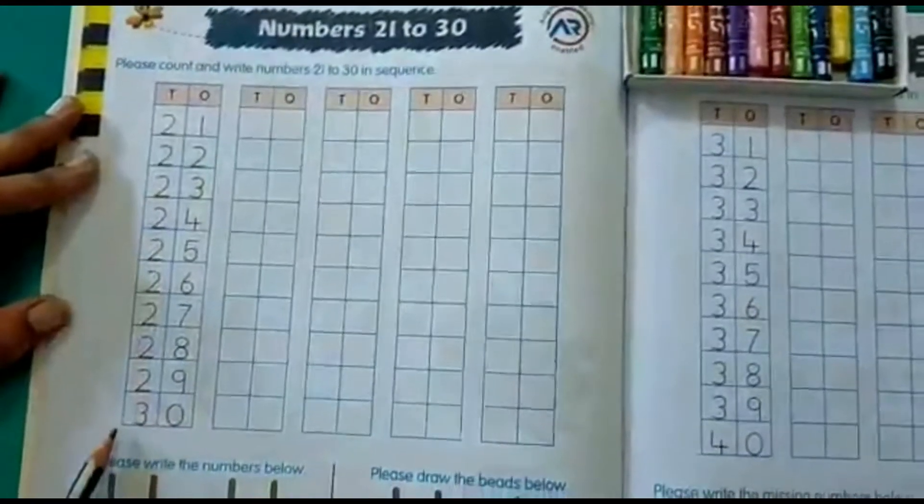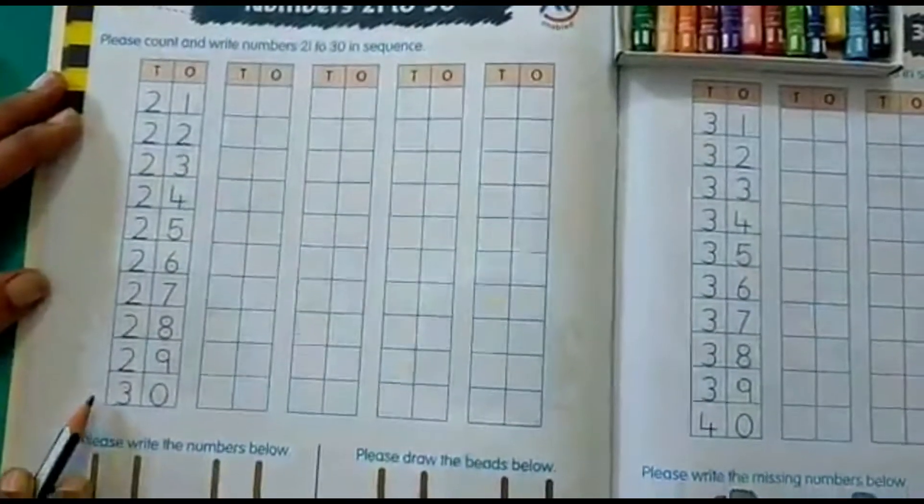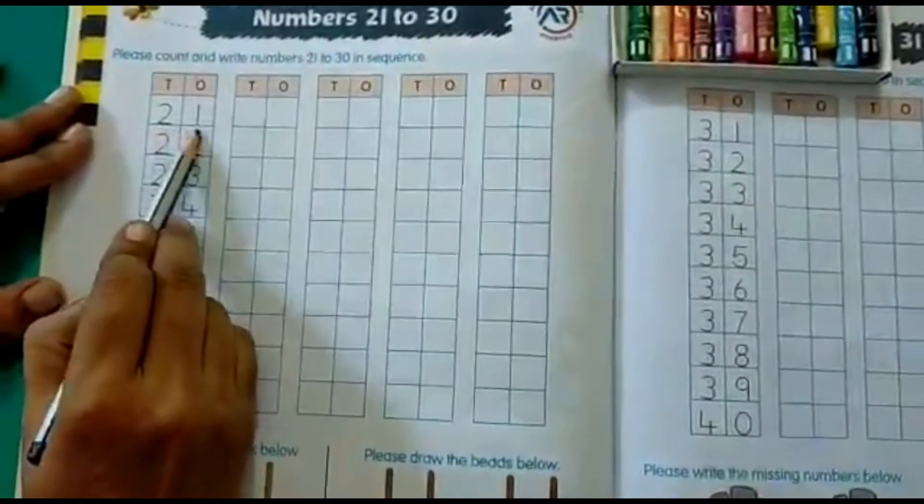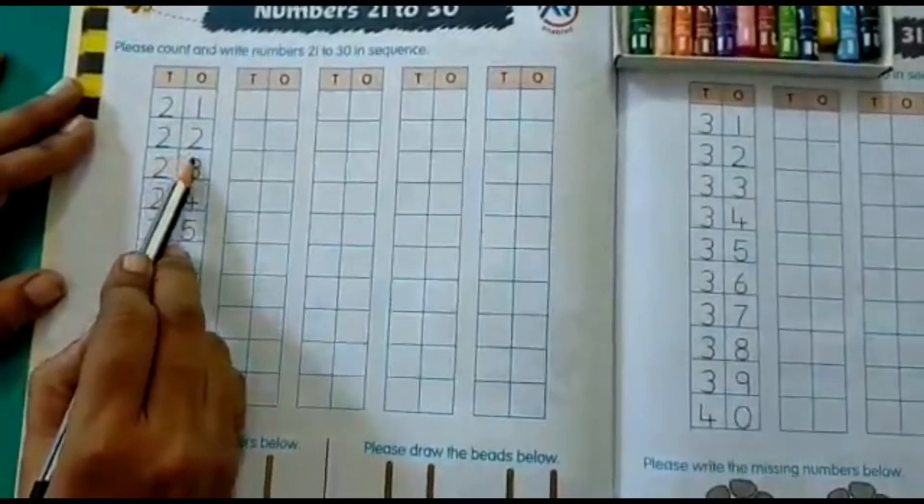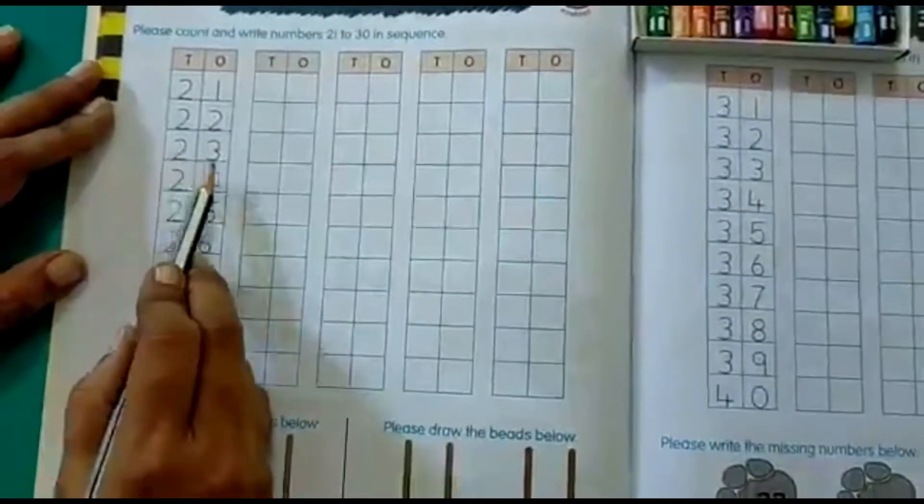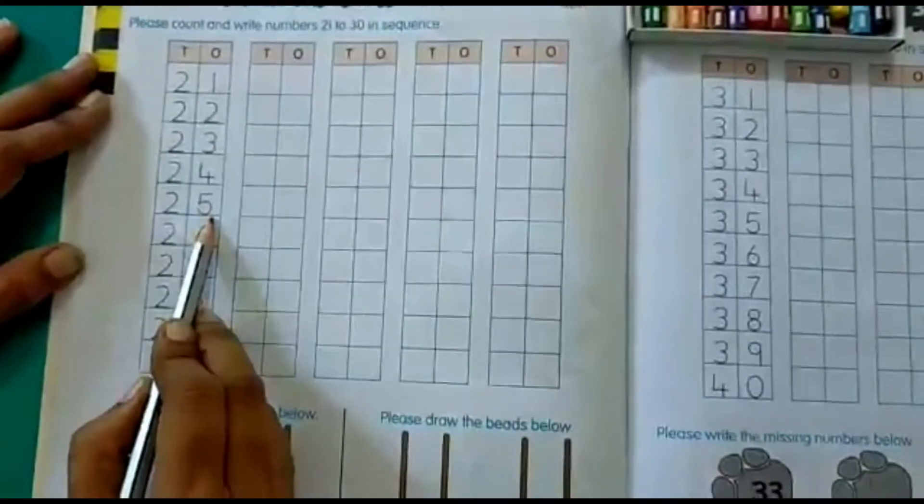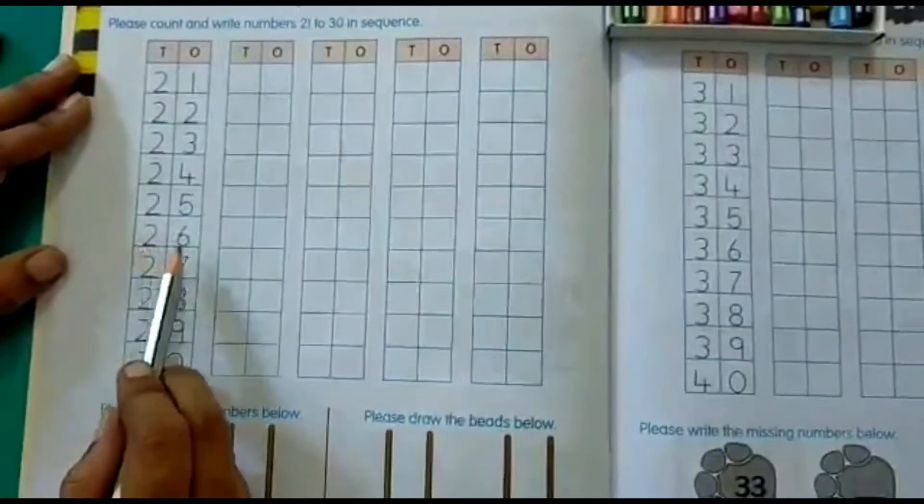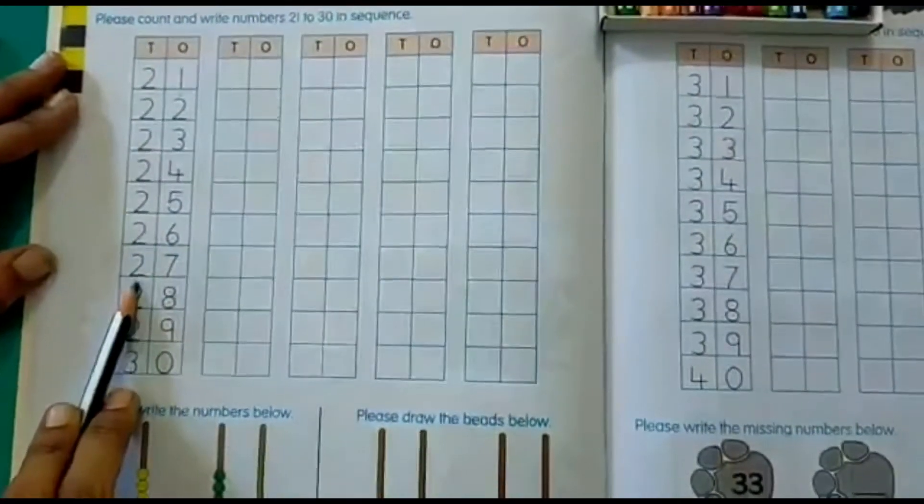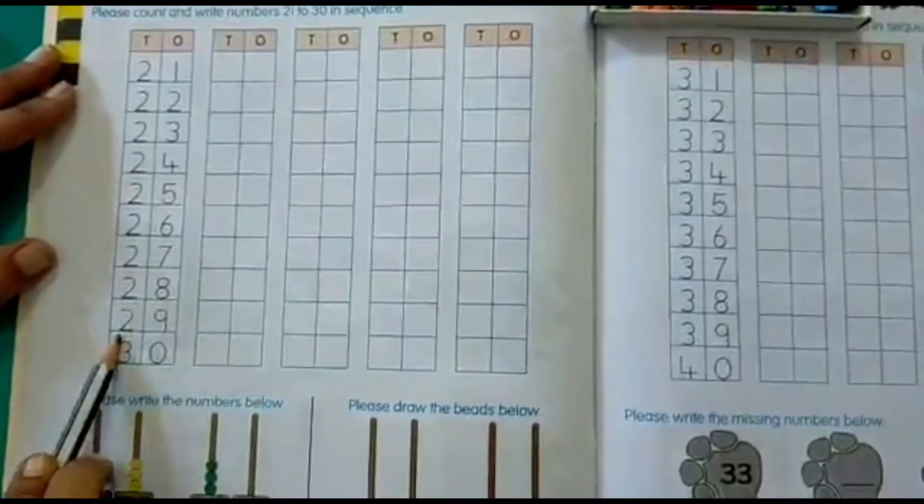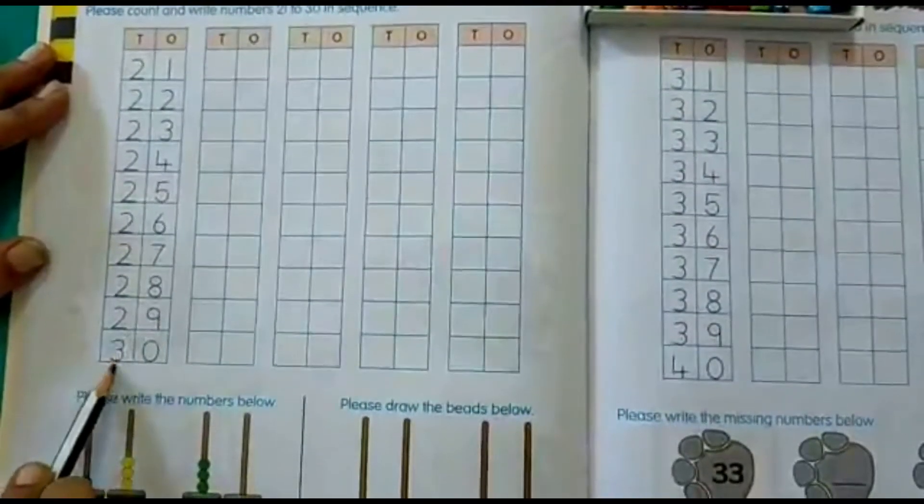So here we have the numbers 21 to 30, let's read it once. 21, 22, 23, 24, 25, 26, 27, 28, 29, 30.